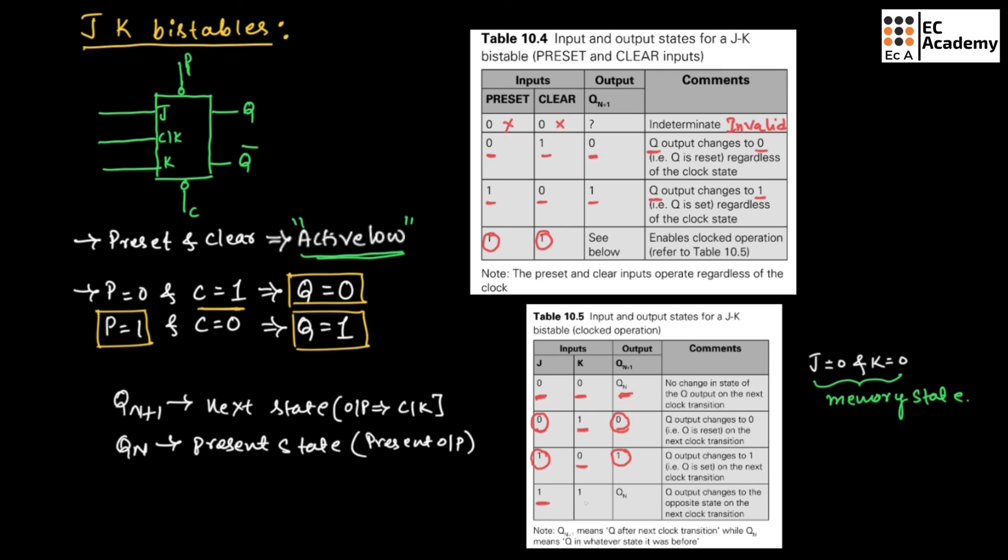And when J and K both are 1, at that case, the output Q will change to opposite state, which means previously if Q was 1, at that case, output will be 0. If Q is 0, output will be 1. If we make J and K as 1, this is also known as toggle, because output is moving from 0 to 1 or 1 to 0.